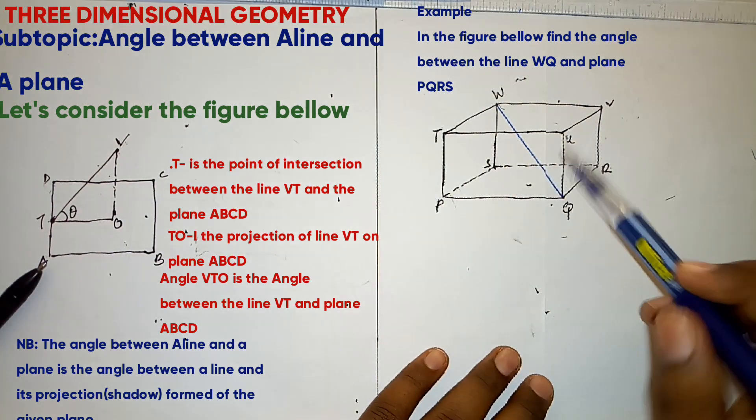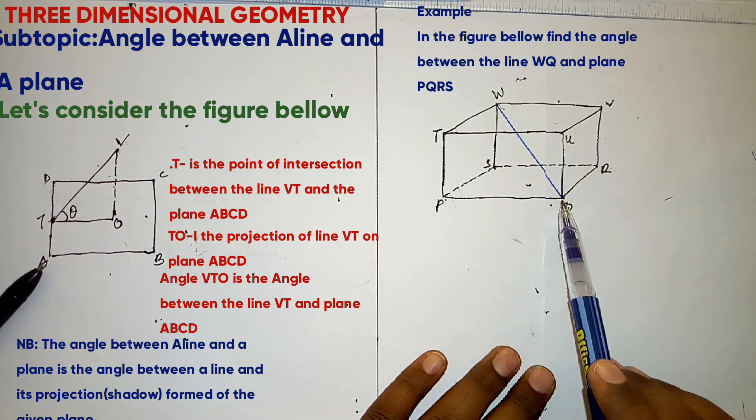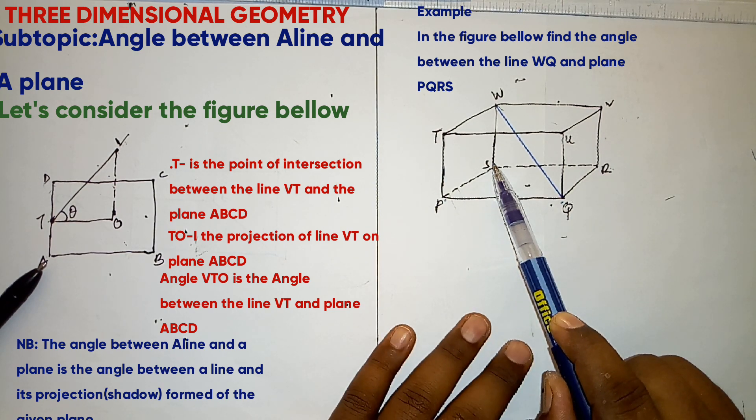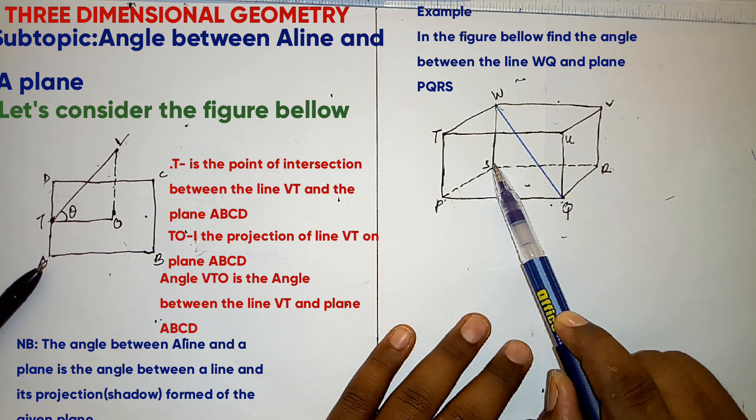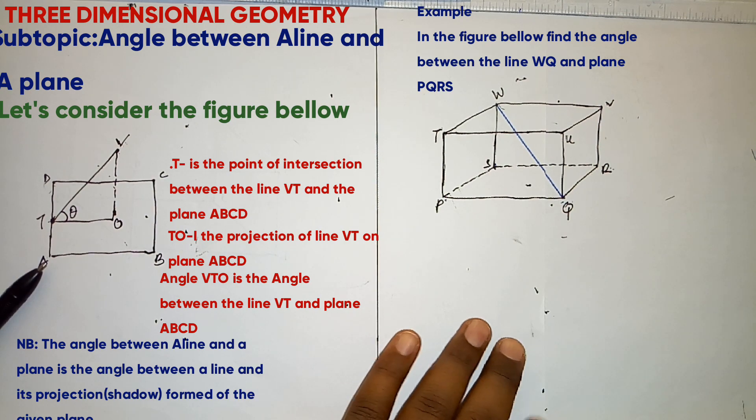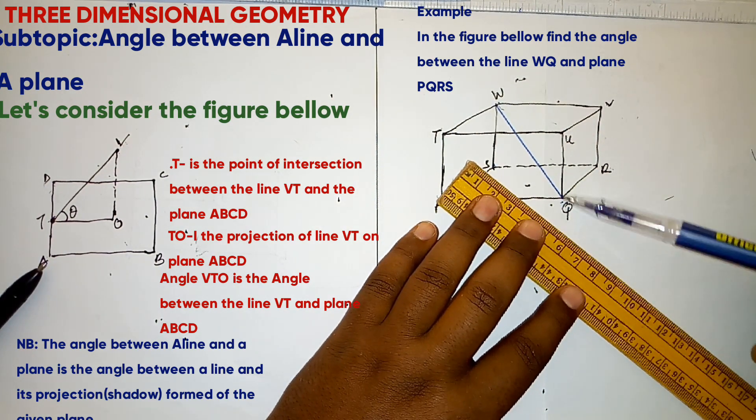So the first thing we have to look for is, we have to find the projection of line WQ on the plane PQRS. Now the projection of line WQ will be QS.